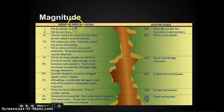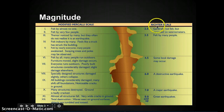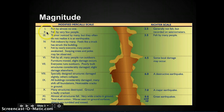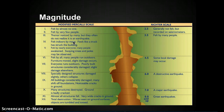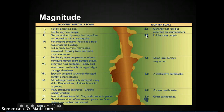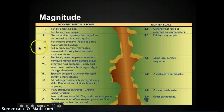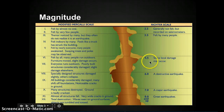The scale we use now is the modified Mercalli scale. It's different from the Richter scale, but we sometimes still use the Richter scale. With the modified Mercalli scale, anywhere from one to four is not very strong — maybe you felt it and thought, 'What was that? Was that an earthquake?' You usually start feeling it up at threes. From three up, you start feeling it. Every time you go up one on the modified Mercalli scale, it's 33 times stronger. On the Richter scale, every time you go up one number, it's 10 times stronger.